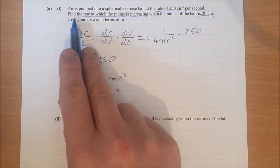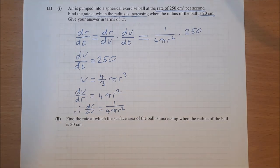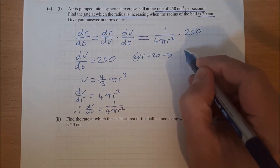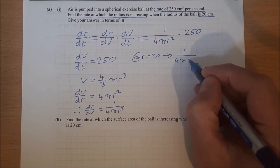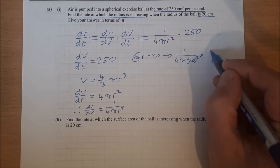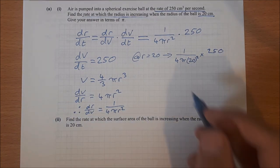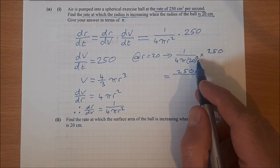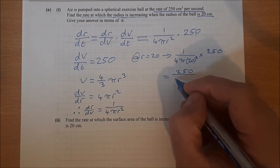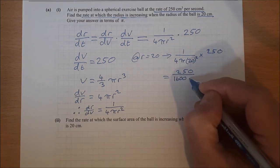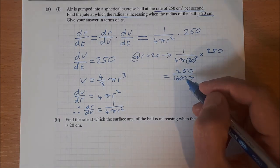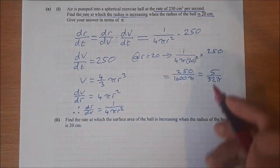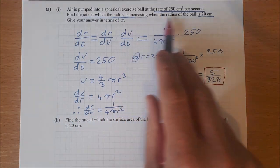They want me to find the rate at which it's increasing when the radius is 20 centimeters, so I need to sub in 20 for r. So I can say at r equals 20, we have 1 over 4 pi, now instead of r I have 20, and it's still times 250. So that's equal to 250 over 1600 pi. So 250 over 1600, simplifying, equals 5 over 32 pi.